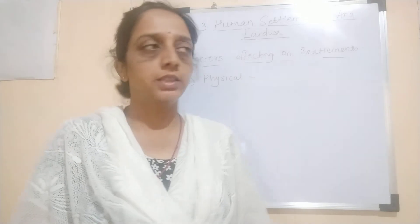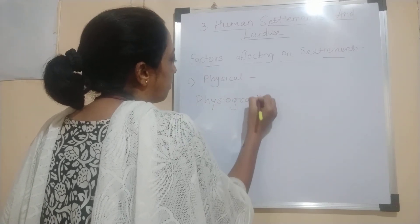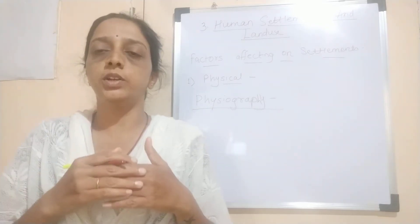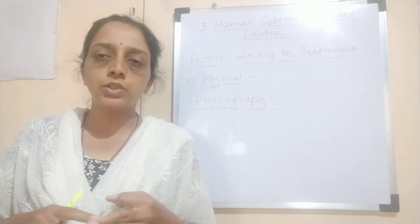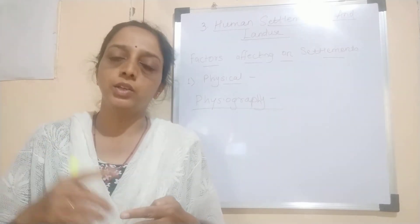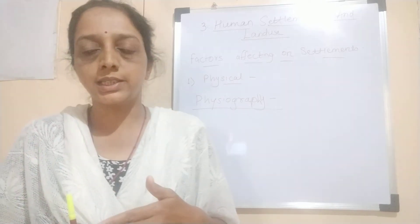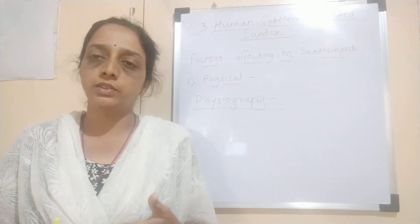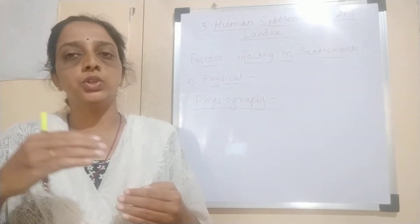The first natural factor is physiography. In physiography, we consider altitude. Three landforms are important: plains, plateaus, and mountains. Mountainous regions are inaccessible — there is a lack of facilities, severe climatic conditions at higher altitude, and unavailability of resources, so man cannot settle there. The plateau region is a source of minerals, so mineral-based activities, mining, and industries are located there, resulting in more clustering than in mountainous regions.